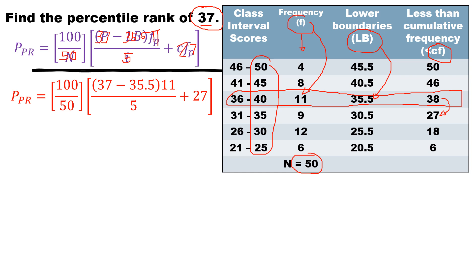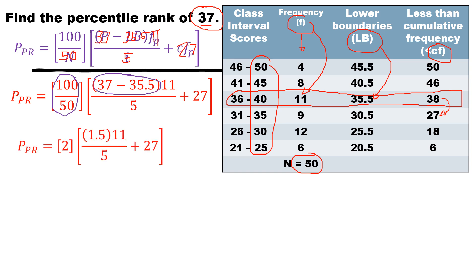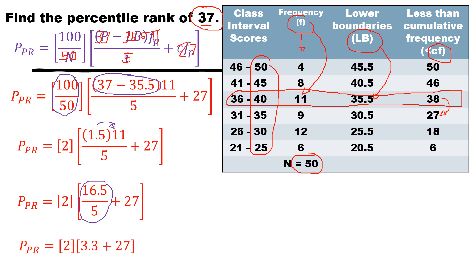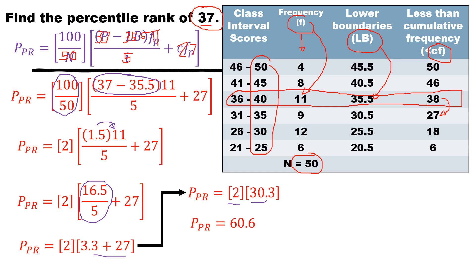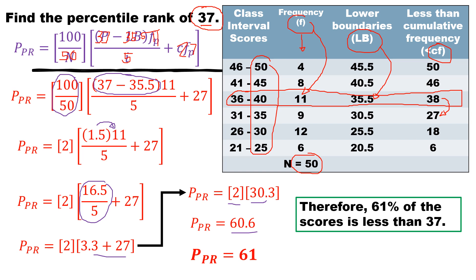Simplifying: 100 divided by 50 gives 2, and 37 minus 35.5 gives 1.5. Multiplying 1.5 by 11 gives 16.5. Dividing 16.5 by 5 gives 3.3. Adding 3.3 plus 27 gives 30.3. Finally, multiplying 2 by 30.3 gives 60.6. Rounding to a whole number, the percentile rank of 37 is 61, meaning 61% of the scores is less than 37.